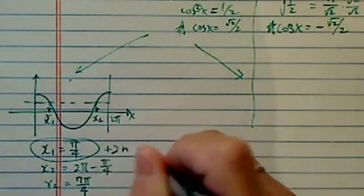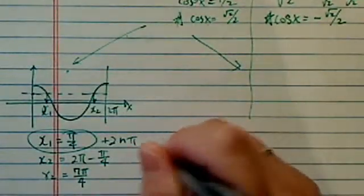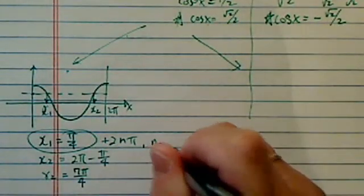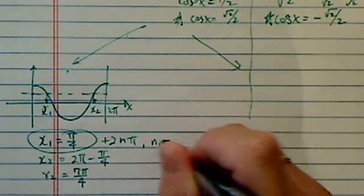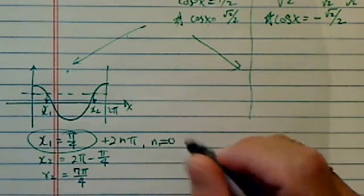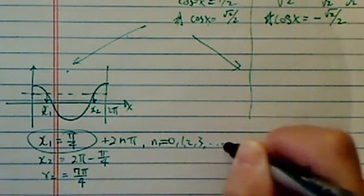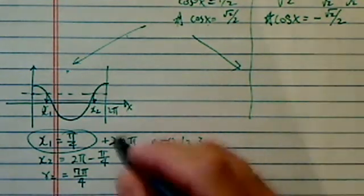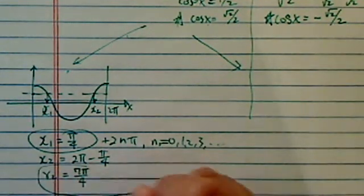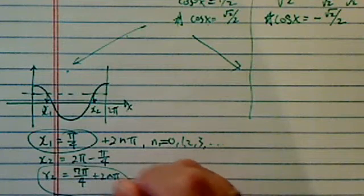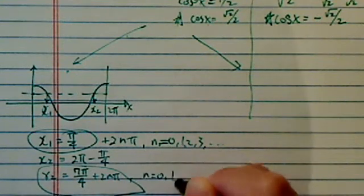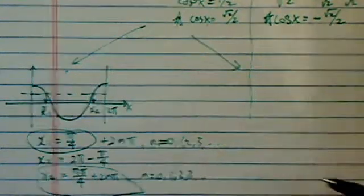And then because the sine, cosine, all the functions repeat themselves, unless they ask you specifically that's in first 0 to 2 pi period, you need to write down the repetition here. So, plus 2n pi. And x2 is equal to 2n pi as well, n is equal to 0, 1, 2, and 3, so on and so forth.